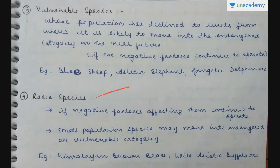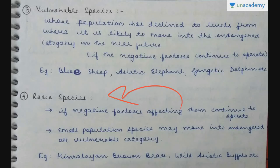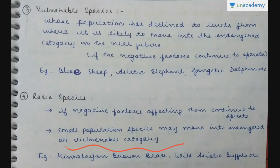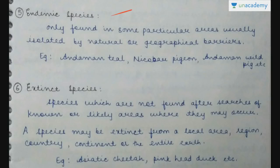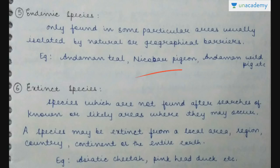Rare species: if the negative factors affecting them continue to operate, these small population species may move into the endangered or vulnerable category. Examples include Himalayan brown bear and wild Asiatic buffalo. Endemic species are only found in some particular areas, usually isolated by natural or geographical barriers. Examples include Andaman teal, Nicobar pigeon, and Andaman wild pig.